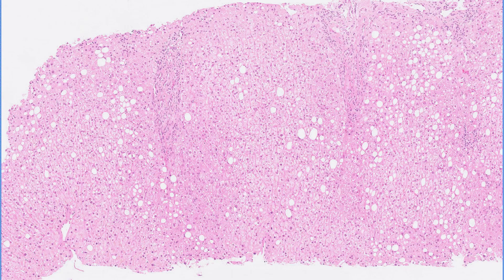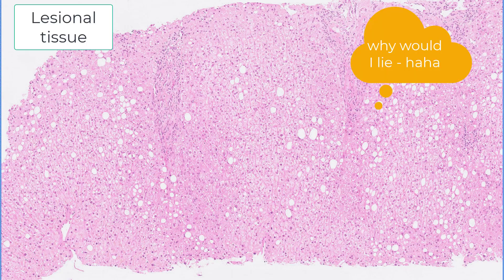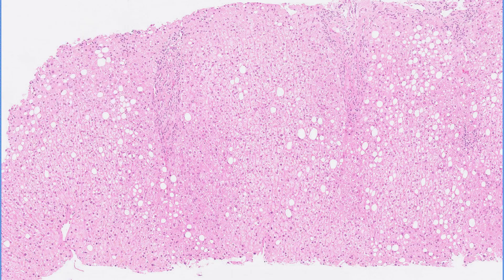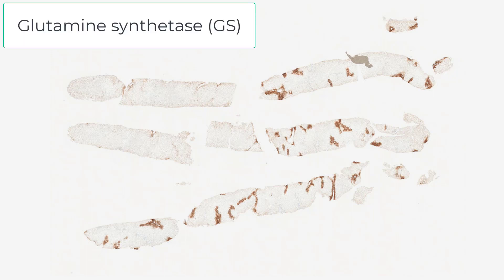I'm going to tell you this is lesional tissue. The first thing we're going to have to do is decide whether this is benign or malignant liver. There's a completely different talk that covers this — but take it from me, this is benign liver with a bit of fat.